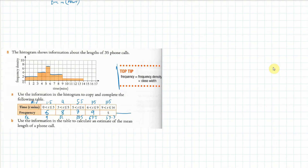Now we add all the frequencies: 6 + 8 + 7 + 9 + 5 = 35. The sum of fx is 9 + 32 + 38.5 + 67.5 + 57.5 = 204.5. The mean equals the sum of fx divided by the sum of f, which is 204.5 divided by 35, giving an estimate of 5.84.